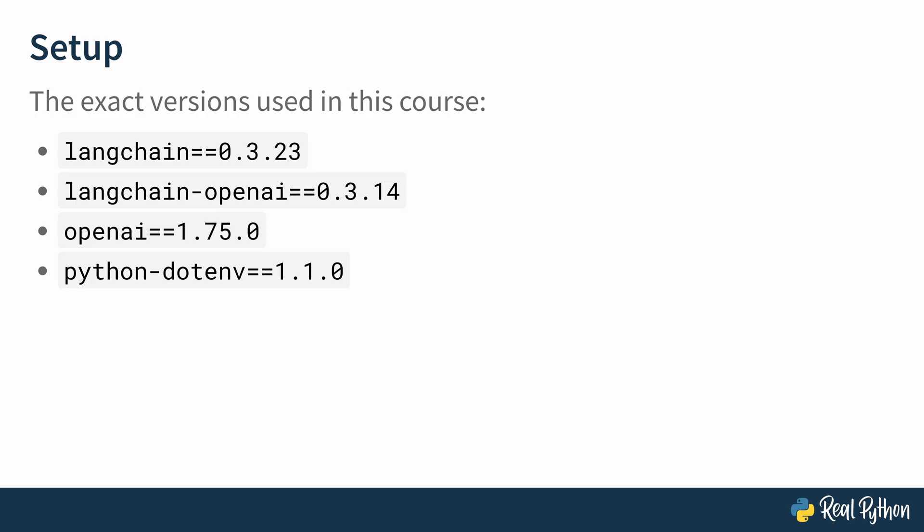If you want to know the exact versions of the direct dependencies I've used in this course, here's a list of them. You can also get them from my requirements.txt file in the supporting materials. I'm showing you these exact versions because these packages are in active development, so version changes might happen quite frequently and might introduce breaking changes. If you want to follow along exactly, make sure to pin your dependencies to these versions.